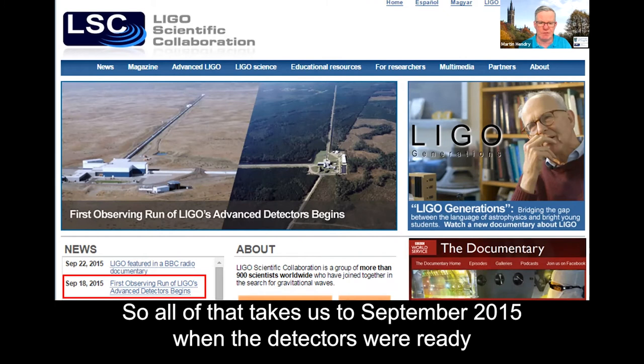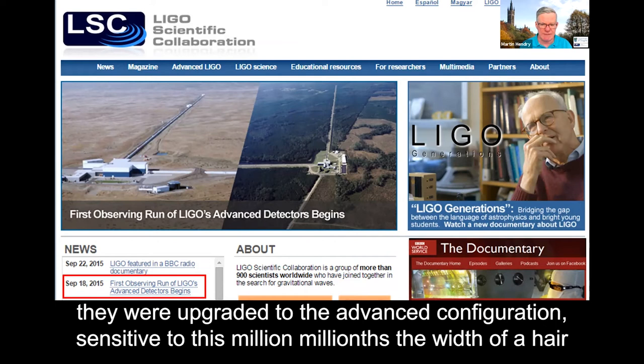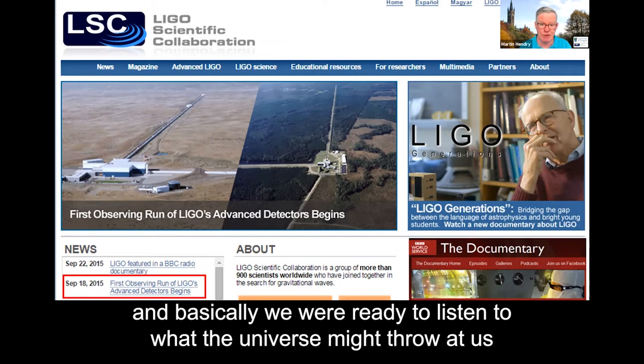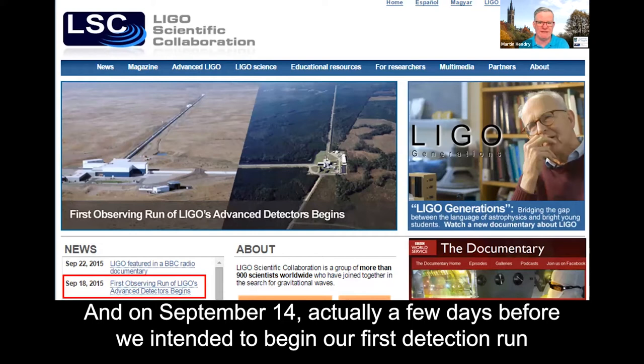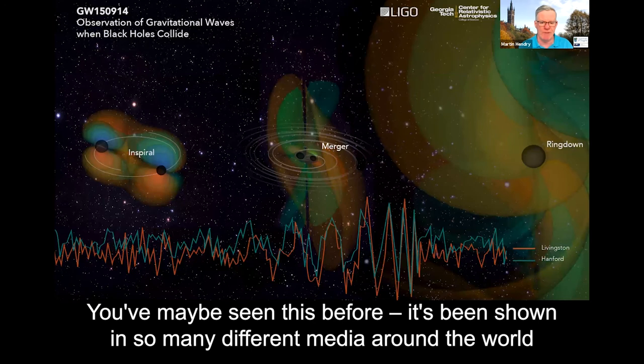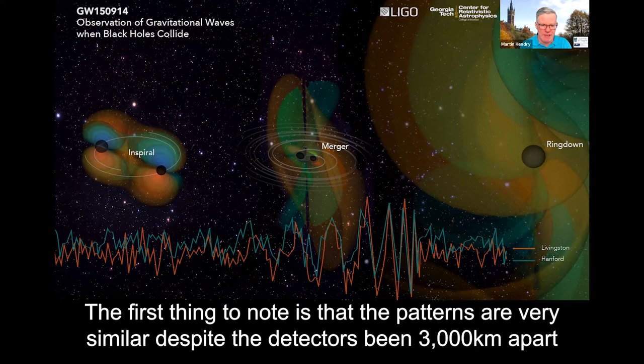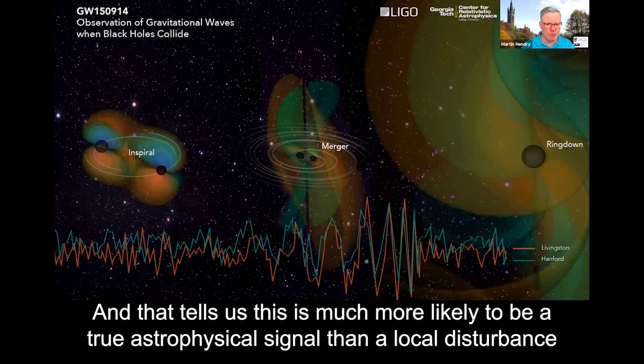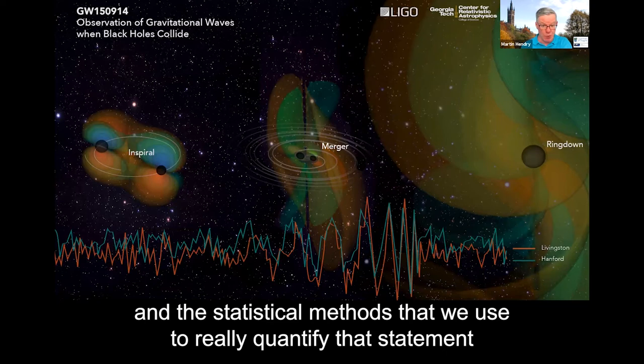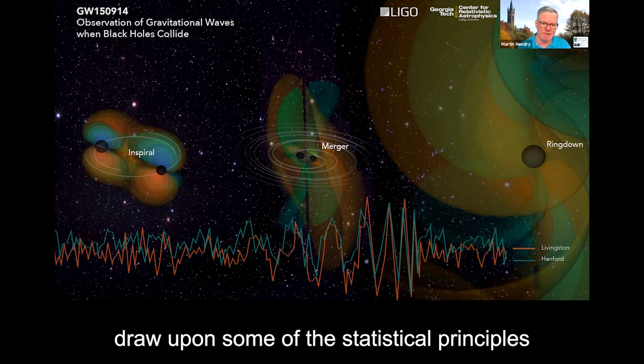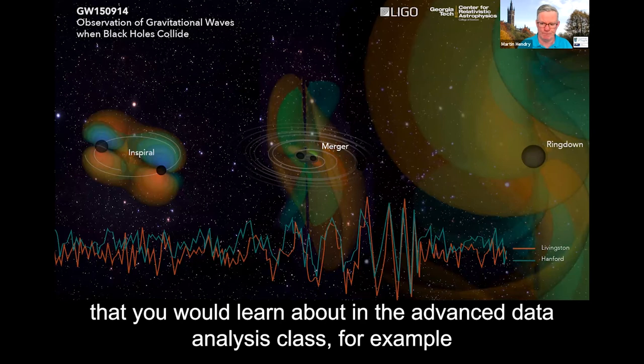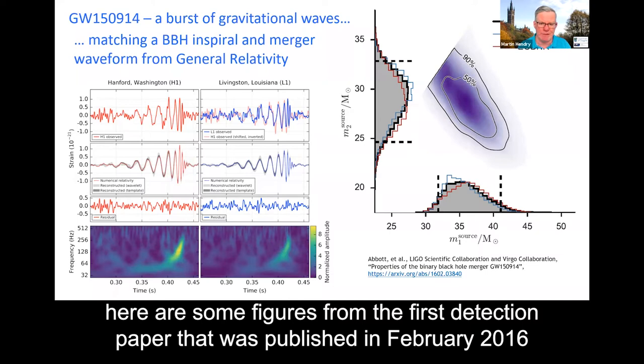So all of that takes us to September 2015, when the detectors were ready, they were upgraded to their advanced configuration, sensitive to this million millionths of the width of a hair. And basically we were ready to listen to what the universe might throw at us. And on September 14th, actually a few days before we'd intended to begin our first detection run, we got our first signal. And you've maybe seen this plot before, it's been shown in so many different media around the world, but it shows the change in the spacetime curvature inferred for the LIGO Hanford and Livingston detectors. So the first thing to note is that the patterns are very similar, despite the detectors being 3000 kilometres apart. And that tells us that this is much more likely to be a true astrophysical signal than a local disturbance. And the statistical methods that we use to really quantify that statement, what we call the false alarm rate, draw upon some of the statistical principles that you would learn about in the advanced data analysis class, for example.